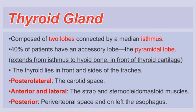Now let's start with the thyroid gland and its normal anatomy and physiology. The thyroid gland is composed of two lobes, and both lobes are connected by an isthmus lying in between them. Approximately 14% of patients have an accessory lobe called the pyramidal lobe, which extends from the isthmus up to the hyoid bone, in front of the thyroid cartilage.